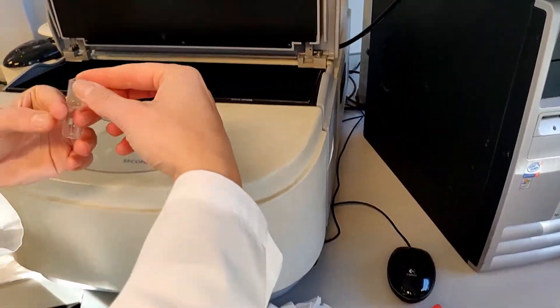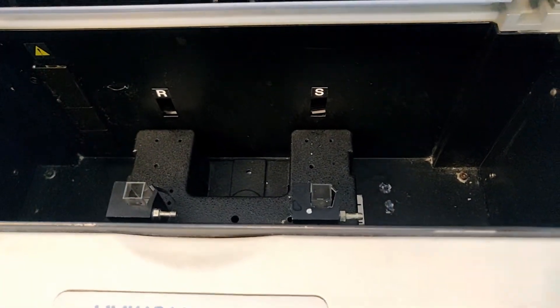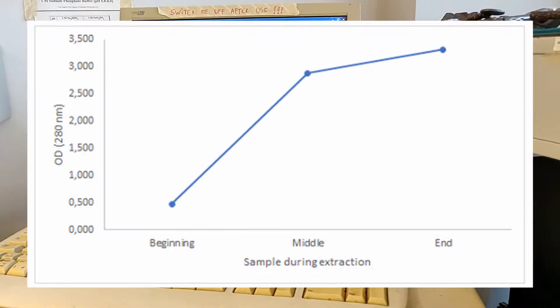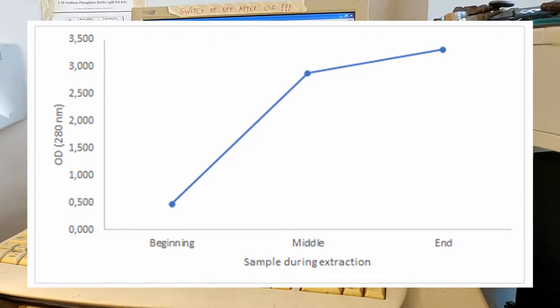represents how many proteins are present in the solution. The OD is expected to increase in this step, because saturation of GNA in the column occurs.